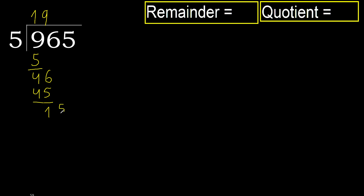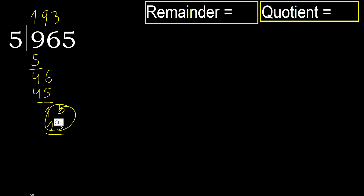Next: 15. 5 multiplied by 4 is greater, so multiply by 3. 5 multiplied by 3 is 15 — it is not greater. Subtract.